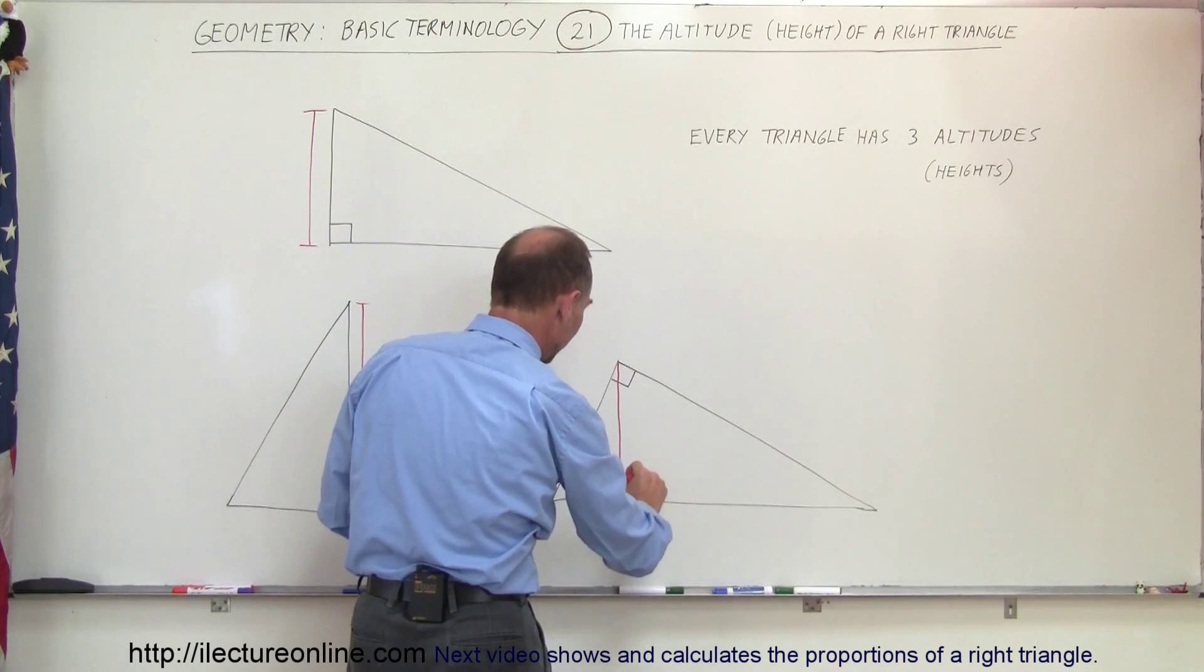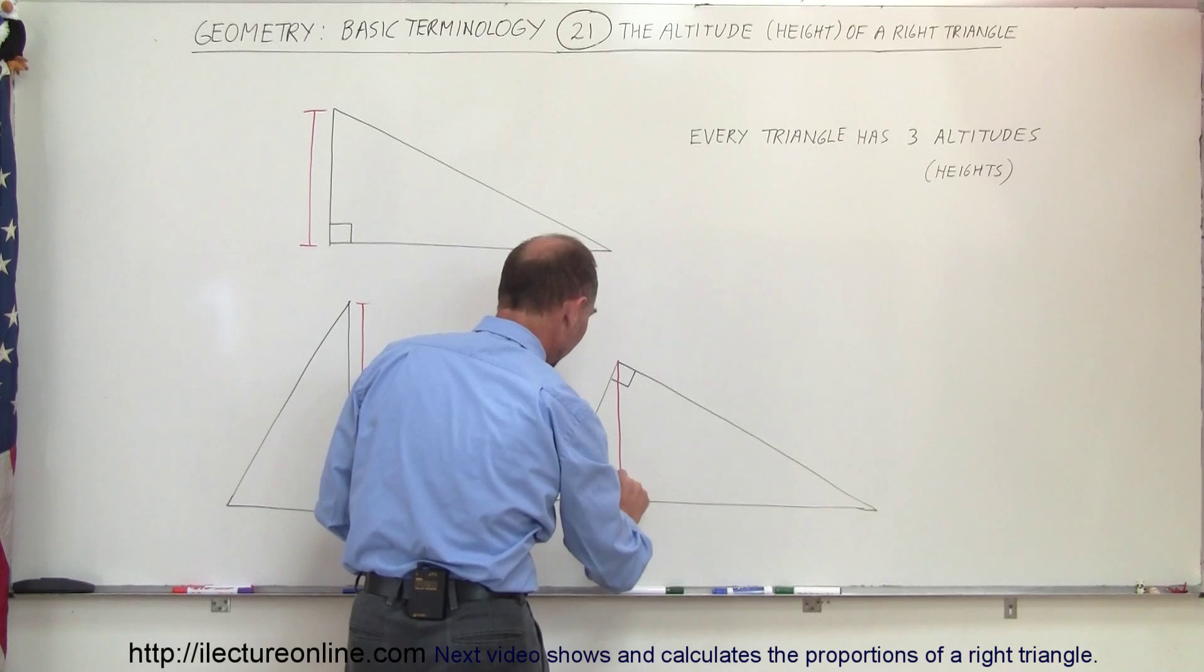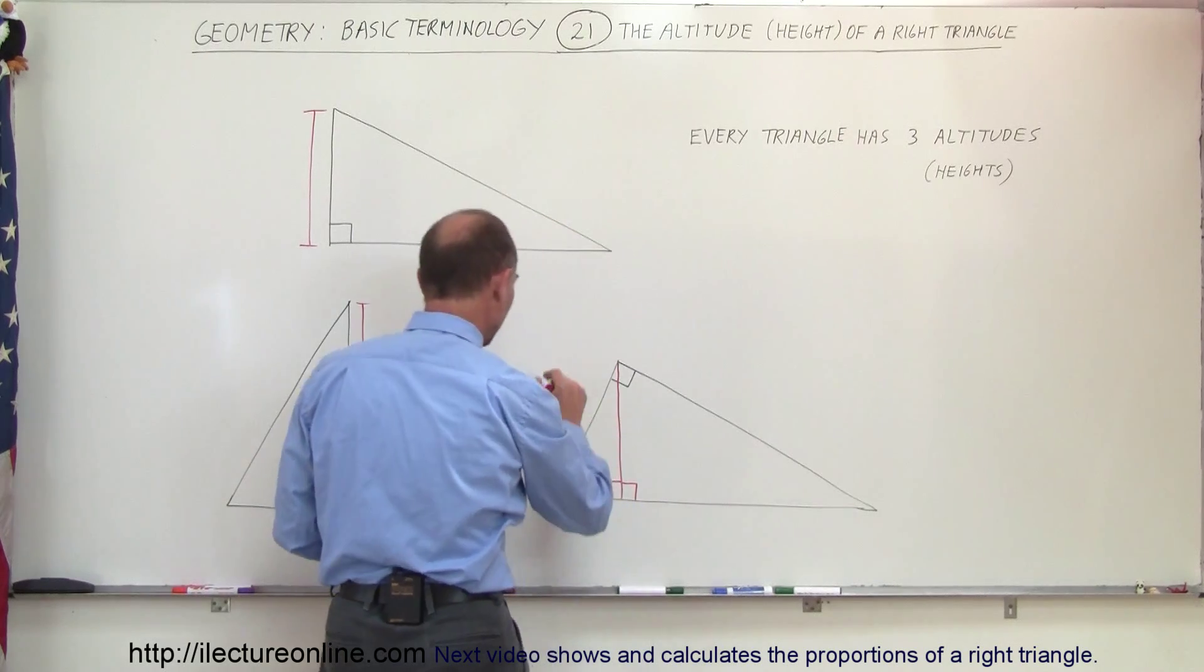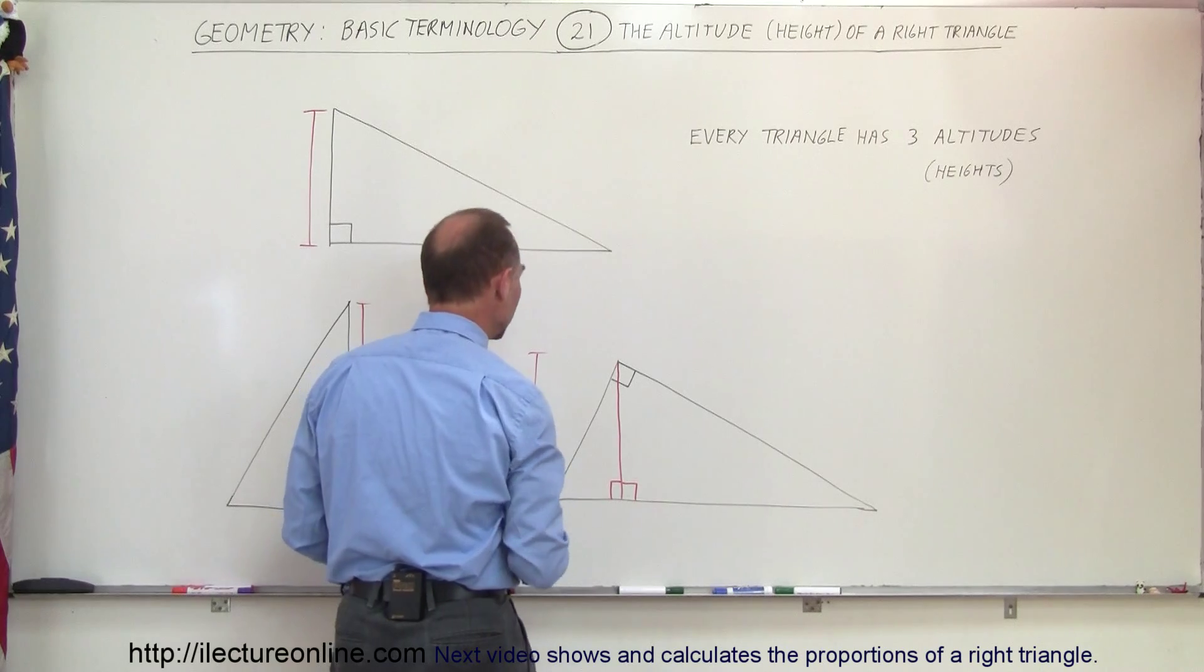And if we then make sure that this is a right angle right here, and this is the right angle right there, then this here would be considered the height or the altitude of the triangle.